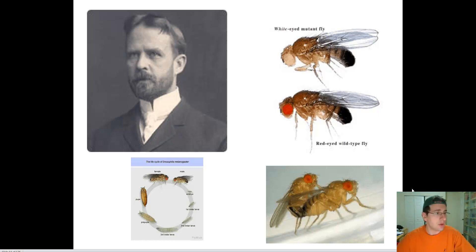So Thomas Hunt Morgan worked with flies. He worked with white-eyed mutant flies versus red-eyed mutant flies. He called his flies the Drosophila flies. And we still use them in biology classes today to actually mock what he has done. And in AP Biology, we actually do experiments with these flies to try to understand the inheritance patterns that Mendel studied.